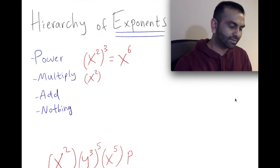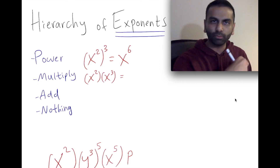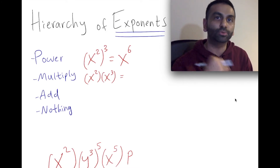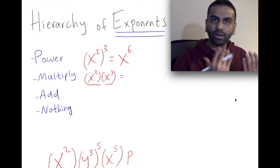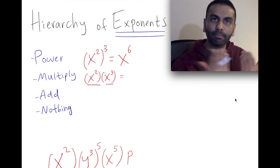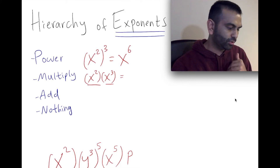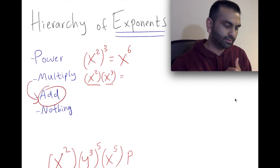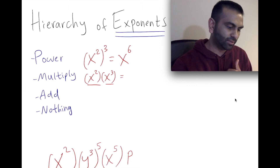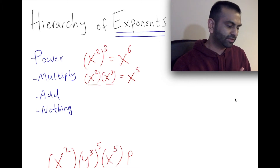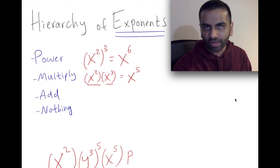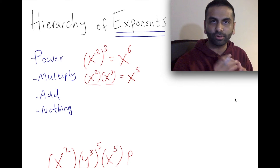What if you're actually multiplying two things, like x squared times x cubed? Notice the rule of going one below: the two main objects are being multiplied, so you go one below and add the exponents. That's going to equal x to the two plus three, which is x to the fifth.